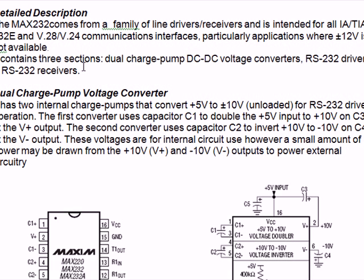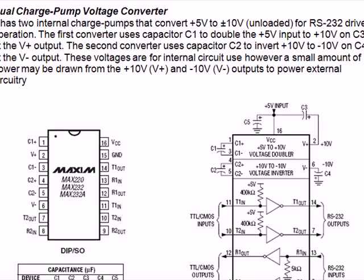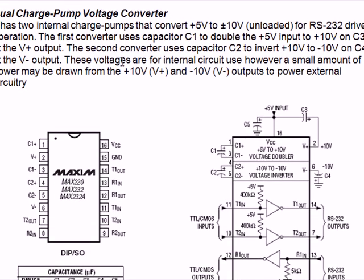RS-232 receivers. Now, what is the dual charge pump voltage converter? It has two internal charge pumps that convert 5 volts — when we feed 5 volts, it converts plus 5 volts to plus 10 volts unloaded. When it is not loaded, you get around 10 volts for RS-232 driver operation.